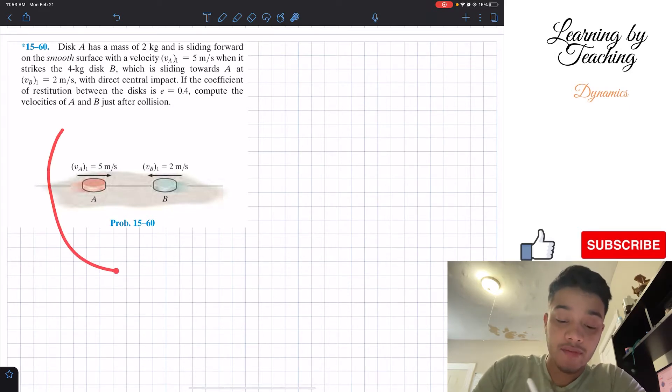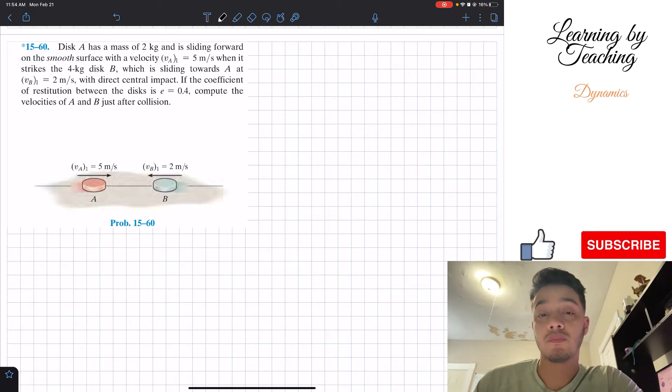So what we're having here is basically the first diagram of this disk A and B. We got disk A and disk B and they're telling us, as mentioned before, disk A is going at 5 meters per second going towards our right and disk B is going towards our left at 2 meters per second. So the first thing I like to do in these videos, let's just write out our givens and we will go from there.